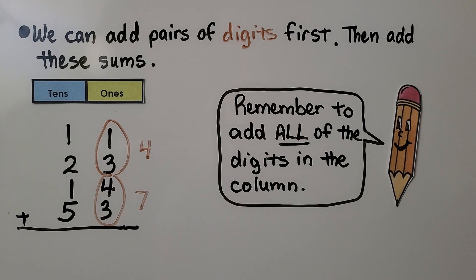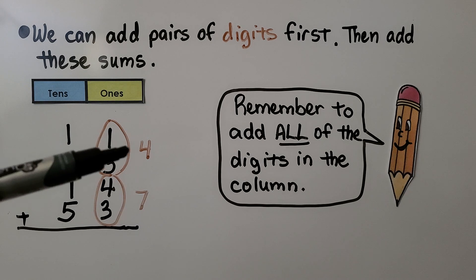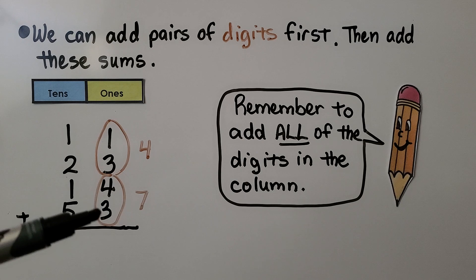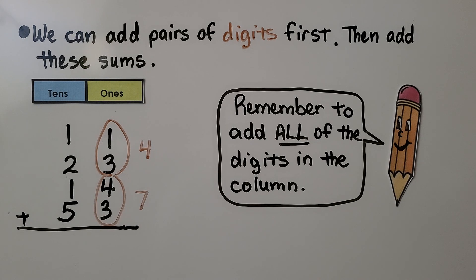We can add pairs of digits first, then add these sums. We can add 1 plus 3 to equal 4, and 4 plus 3 to equal 7. And 4 plus 7 is equal to 11.